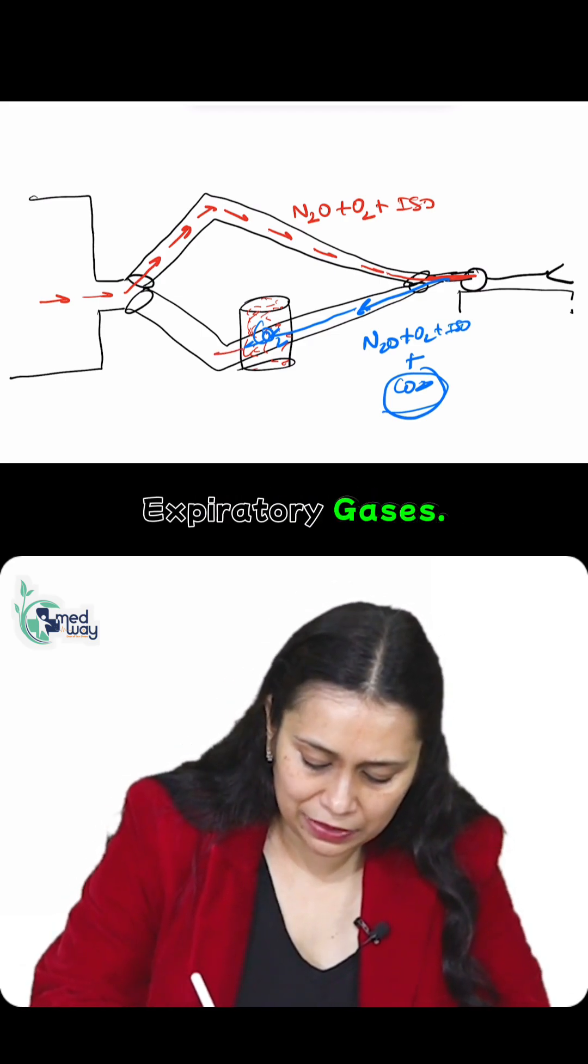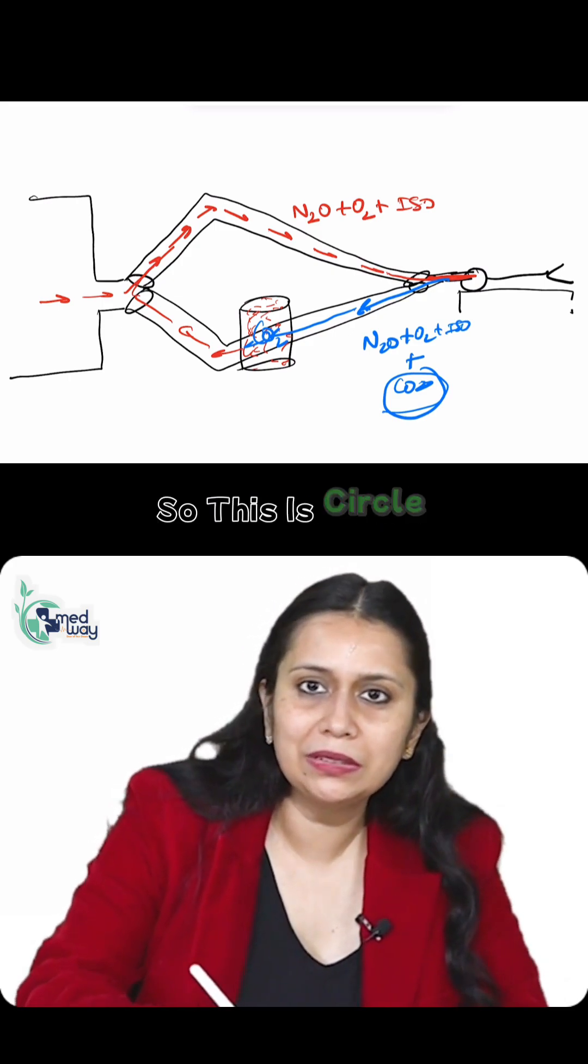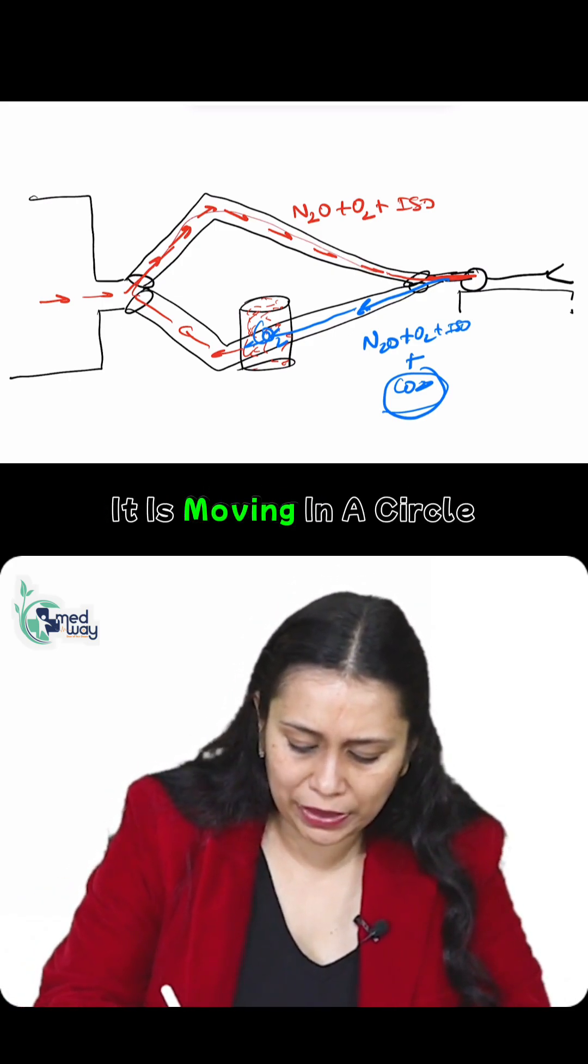The rest of the expiratory gases are recycled into the inspiratory limb. So this is a circle system. The gas is not moving to and fro, it is moving in a circle.